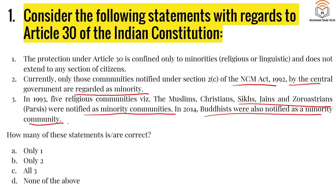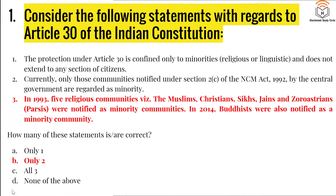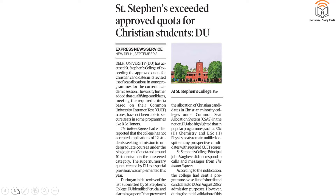Article 30 specifically is a minority community right giving them the right to administer and establish their own educational institutions. The first and second statements are correct. The third statement is wrong — when the first five minorities were notified, Buddhist was not one of them; it was Jains that were notified as minorities in 2014, making the list six. Remember: there is no definition of minorities in the Constitution — it is defined by the central government under the National Commission for Minorities Act 1992. This question arises from today's Indian Express article about Austin Stevens College possibly exceeding the approved quota for Christian students at Delhi University.